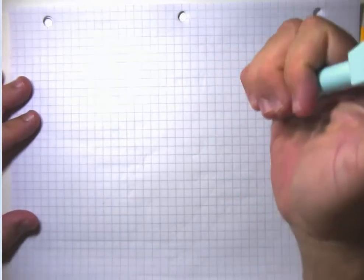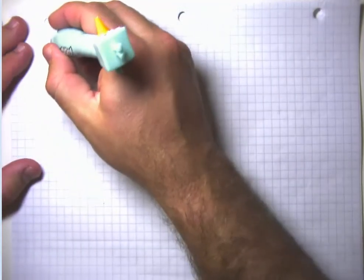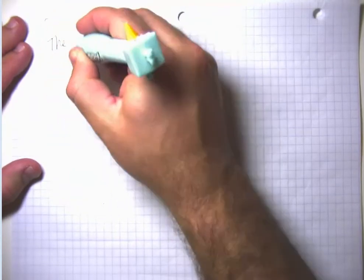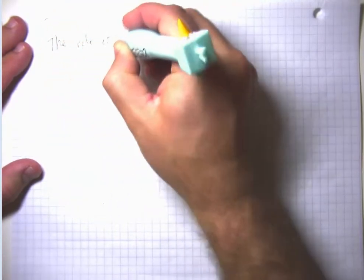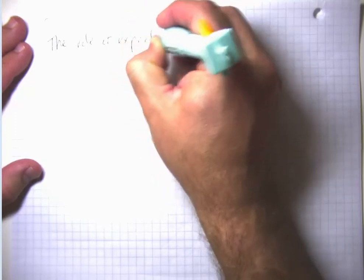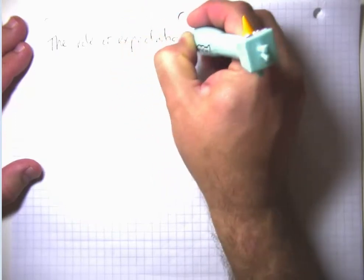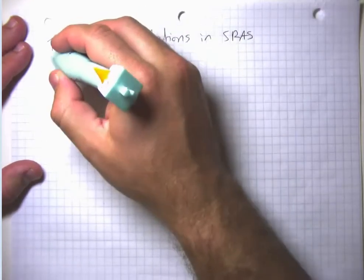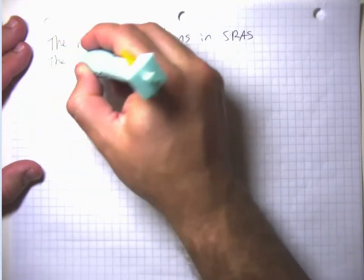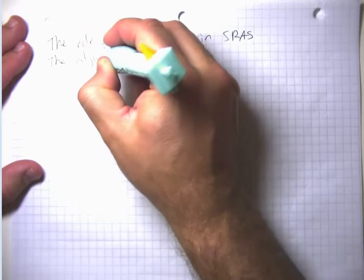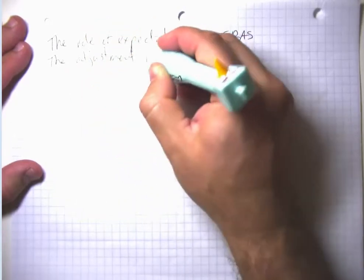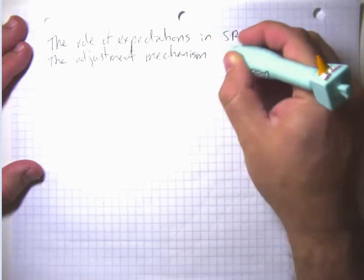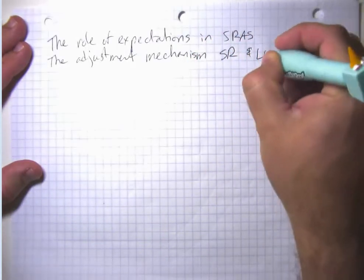In this video, I'm going to talk about two things: the role of expectations in short-run aggregate supply, and the adjustment mechanism between the short-run and long-run equilibrium.